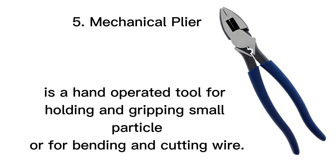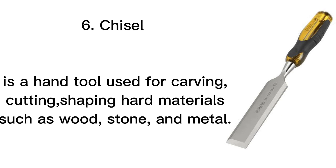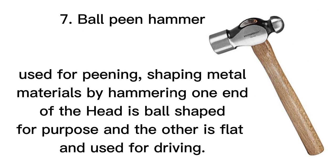5. Mechanical plier: Is a hand-operated tool for holding and gripping small objects, or for bending and cutting wire. 6. Chisel: Is a hand tool used for carving, cutting, and shaping hard materials such as wood, stone, and metal.